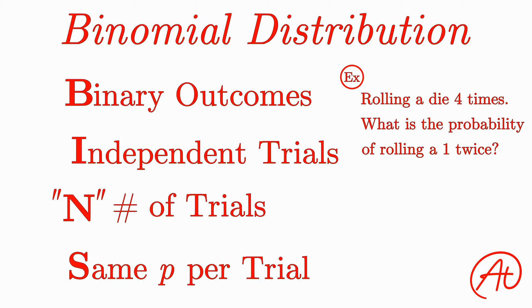So first, during each roll, you can put the outcome into one of two categories. Either you roll a one, aka a success, or you don't roll a one, aka a failure. So it satisfies the B. Next, the fact that you roll a certain number during one trial has no effect on the number you roll on the next trial. So this also satisfies the I.